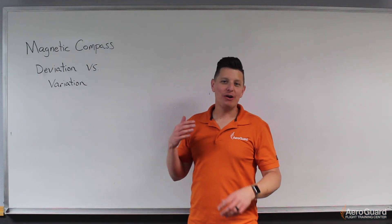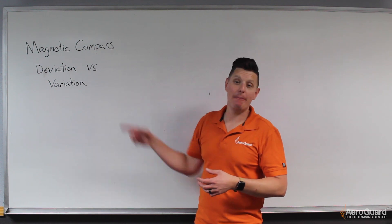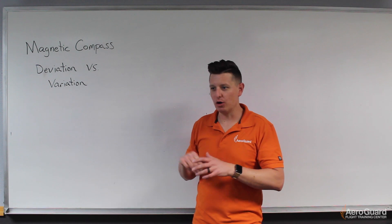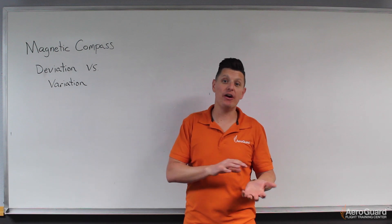Hey guys, I'm Eric at AeroGuard Flight Training Center, and today in this video we're going to talk a little bit about the magnetic compass. Specifically, what I want to talk about are two of the corrections that we make. One is called deviation, and the other is called variation.